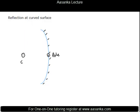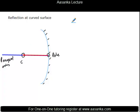The imaginary line going from the pole to the center of curvature is called the principal axis. The radius of curvature is simply the distance from the pole to the center of curvature, or the radius of the sphere taken. These terms are used for convex mirrors in the same fashion.